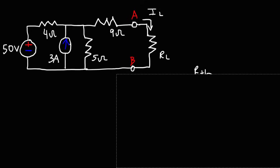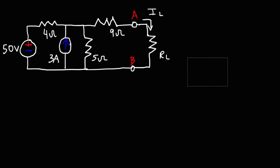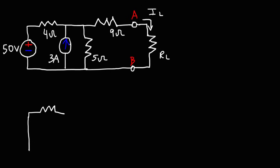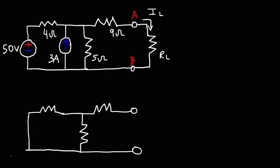Let's find the Thevenin resistance first. We need to redraw the circuit. We're going to replace the independent voltage source with a short circuit. The independent current source will be replaced with an open circuit, so we're not going to draw anything there. We're going to draw what is left over from point A to point B, and we're going to remove the load resistor.